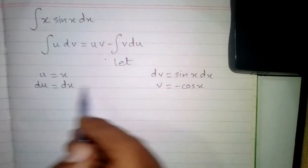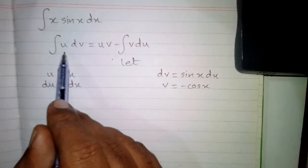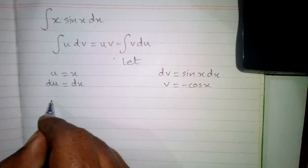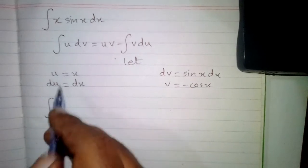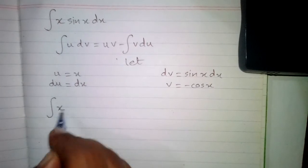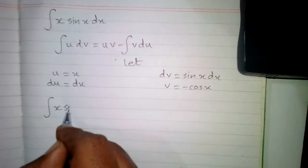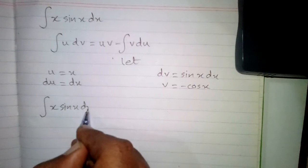Now we will use the values of u, v, du and dv in this formula. So first of all we will write integral of u dv. The value of u is x and dv is sin x dx, so we will write x sin x dx.